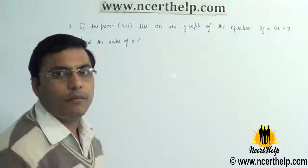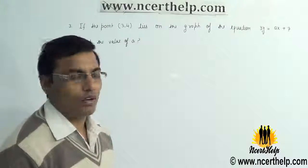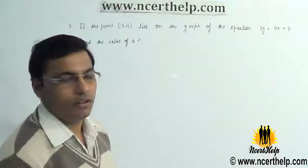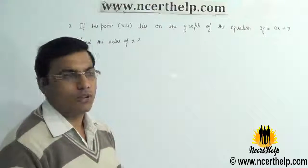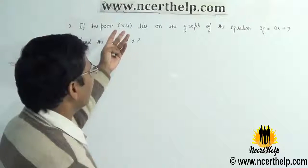In this question, we want to find the value of a if the point (3, 4) lies on a given equation 3y = ax + 7. In such type of cases, we always put the value of x and y given in the point.